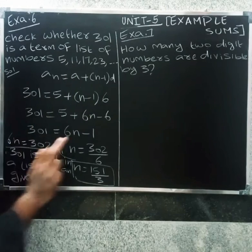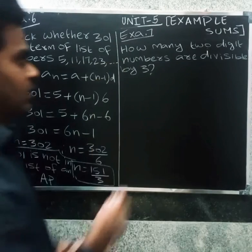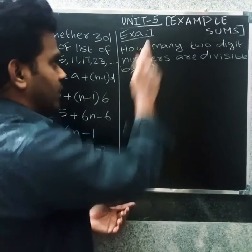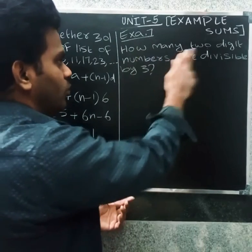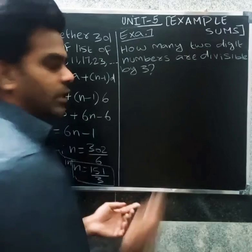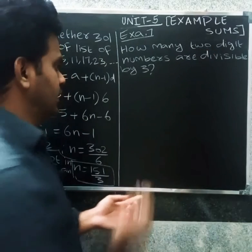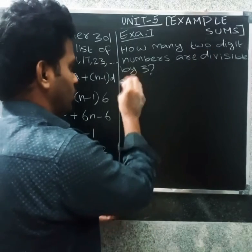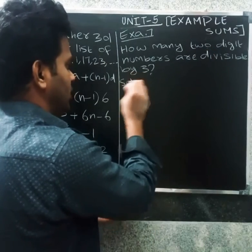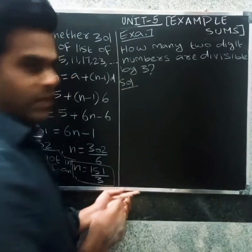Next, Example 7: How many two-digit numbers are divisible by 3?